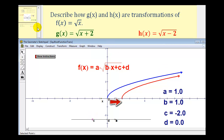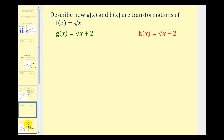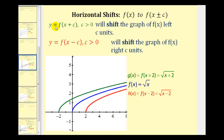So let's summarize this transformation. When y is equal to f of the quantity x plus c, and c is positive, this will shift the parent function left c units — where we had g of x equals f of the quantity x plus two, equal to the square root of the quantity x plus two. And if y equals f of the quantity x minus c, again where c is positive, this will shift the graph right c units — where we had h of x equals f of the quantity x minus two, equal to the square root of the quantity x minus two.